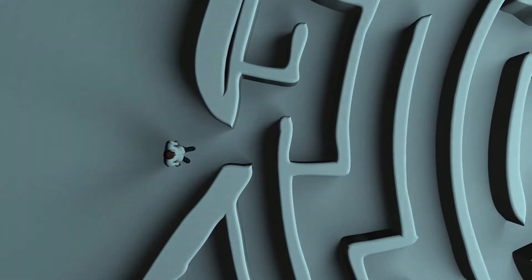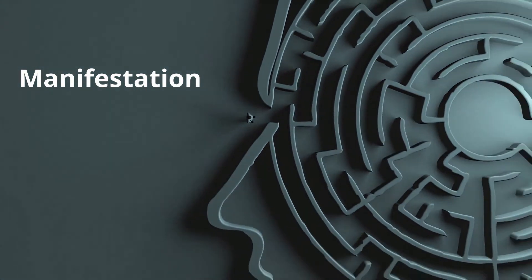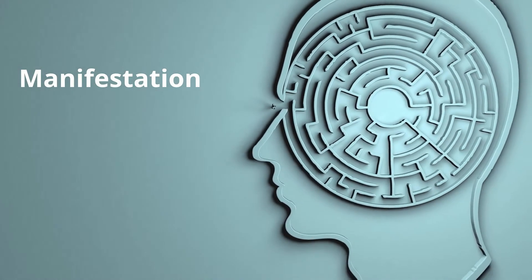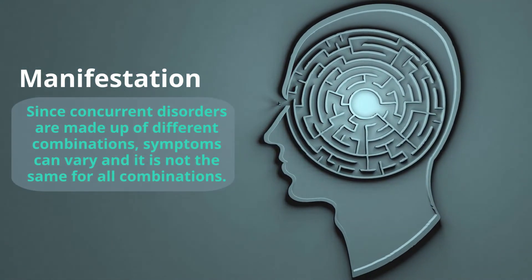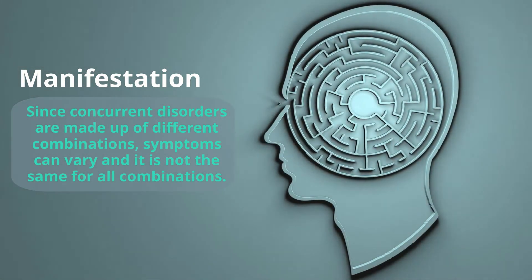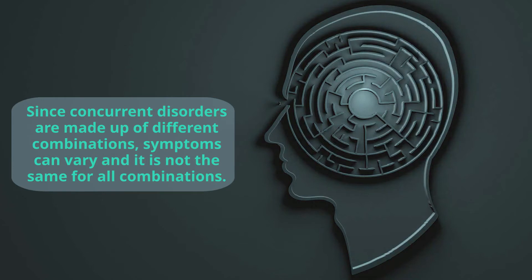Moving on to manifestation: how concurrent disorders manifest depends on the combination of disorders at hand. Since concurrent disorders are made up of different combinations, symptoms can vary and it is not the same for all combinations. The combinations of concurrent disorders can be divided into five main groups.